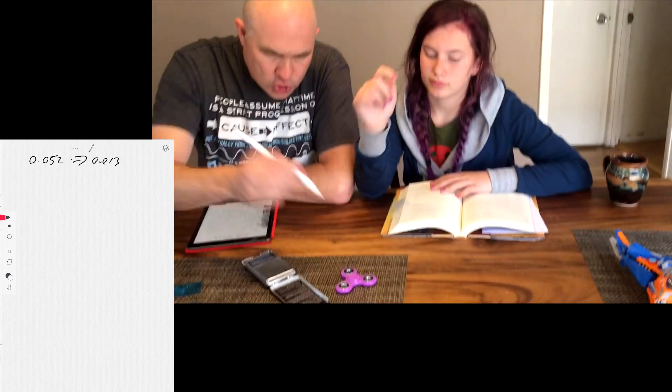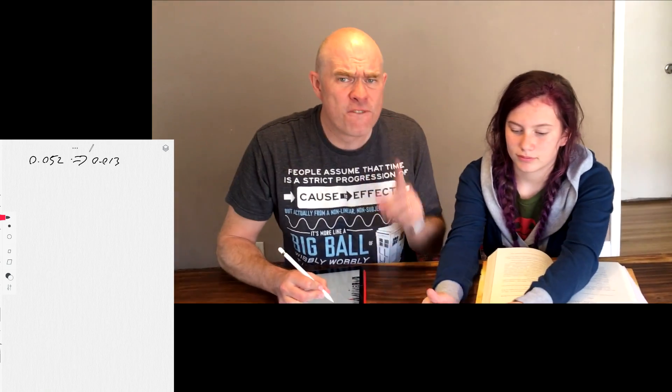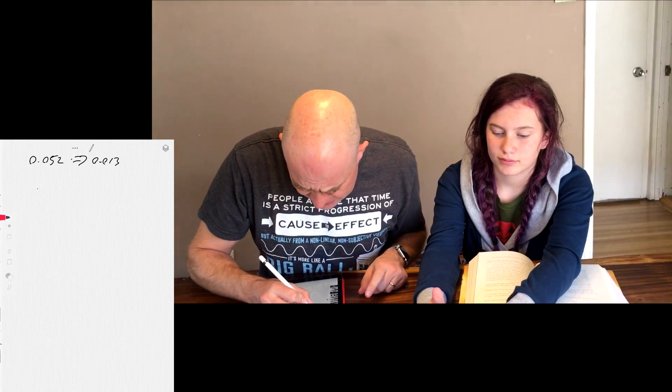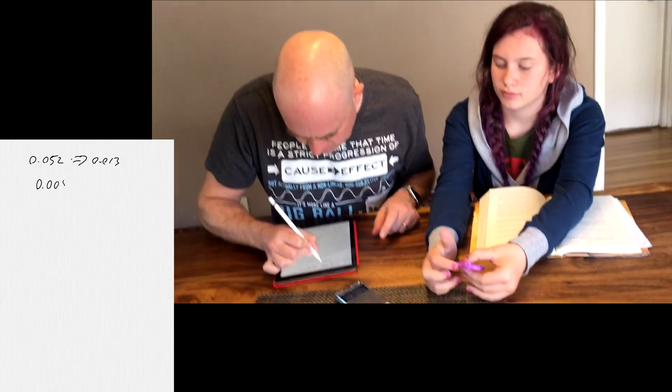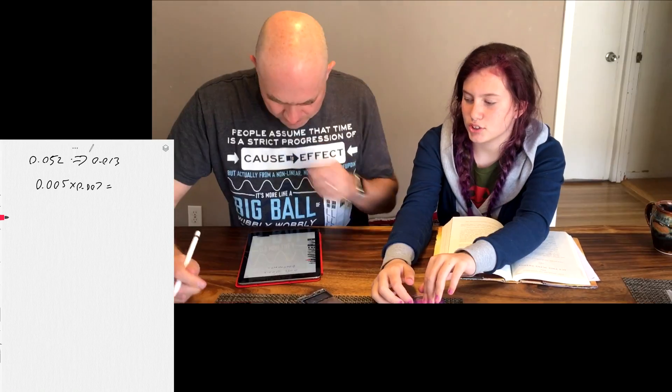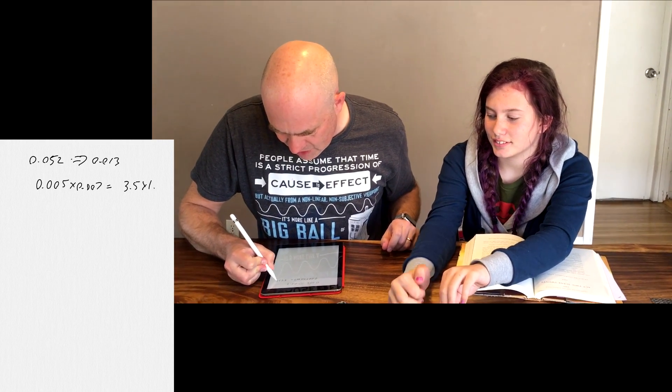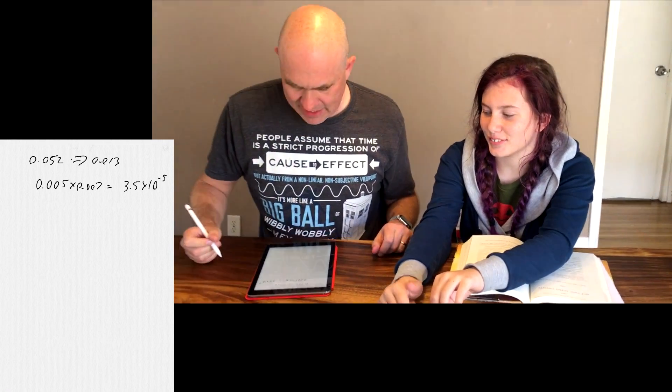So the cross section of that is roughly, and I mean very roughly, it's about 0.005 times 0.007, which is 3.5 times 10 to the minus five meters squared. That's what it is, 3.5 times 10 to the minus five.